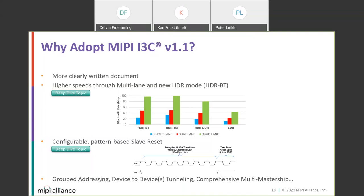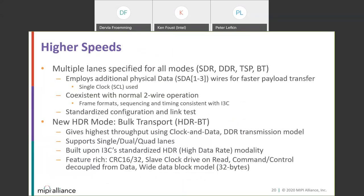Beyond that, grouped addressing and device-to-device tunneling add great capabilities, and multi-mastership via the secondary master device definition is much more comprehensive and thorough in V1.1 — not only in how it's specified, but also in how those devices are configured and how they interact with all the other features supported by I3C.